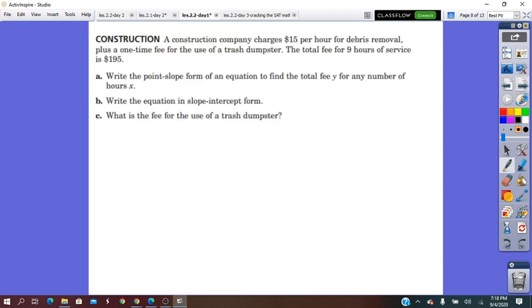A construction company charges $15 per hour, which means each hour they charge $15. So, this is going to be the change. Rate of change, this is going to be, in fact, the slope. We said that slope also is called the rate of change. So, from here, direct we can write slope is 15.